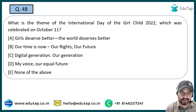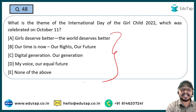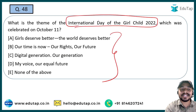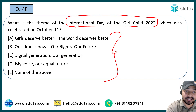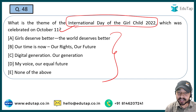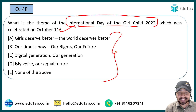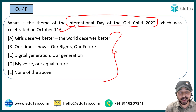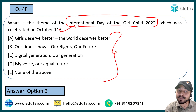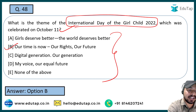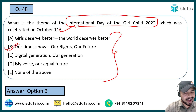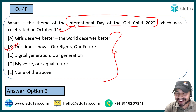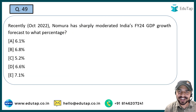The next question: what is the theme of the International Day of the Girl Child 2022, which we celebrate on October 11th? For important international days, you are required to remember the date and the theme. The date is October 11th. The theme is 'Our Time is Now — Our Rights, Our Future.' That is the theme of this particular day for the year 2022.